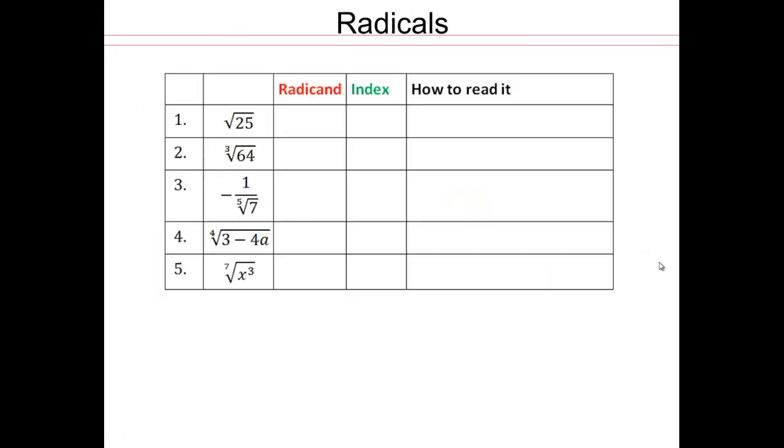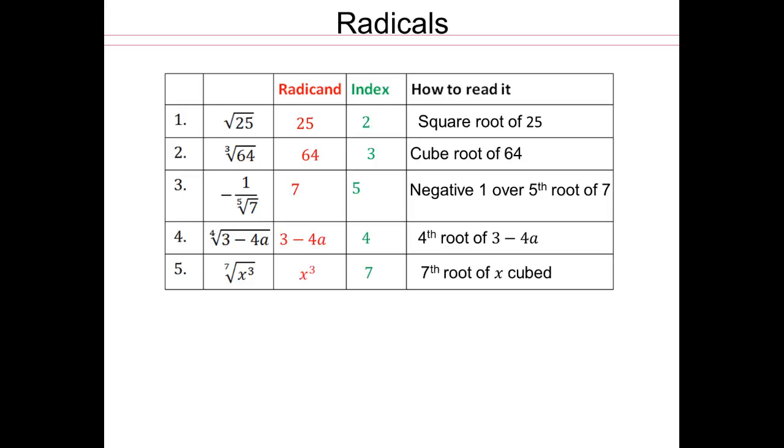All right, so go ahead and give us the radicand, index, and how to read it. How you would read it out loud. Write it in words here, please. So 25 is the radicand. When there is no number here, that means index is 2, and you would read that as square root of 25. So go ahead and do that for all of them. Pause the video here, do the problems, and then check. See if you got them all. If you got them all correct, then that's great.